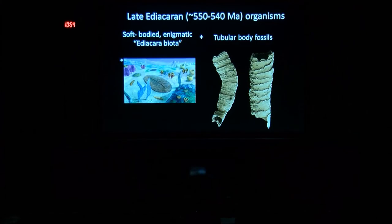The picture that's emerging is that there's both Ediacaran biota as well as tubular body fossils around from roughly 550 to 540 million years ago. One question is how are these two very different groups of organisms interacting or not interacting? Are they stratigraphically overlapping or not? Are they ecologically overlapping, and if so, what's the nature of that and for how long?